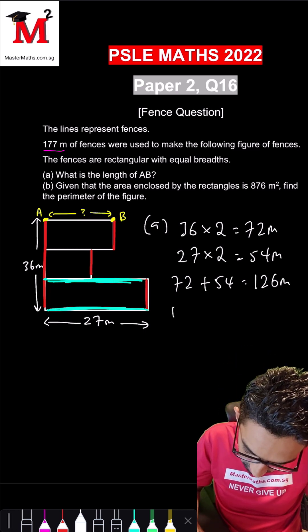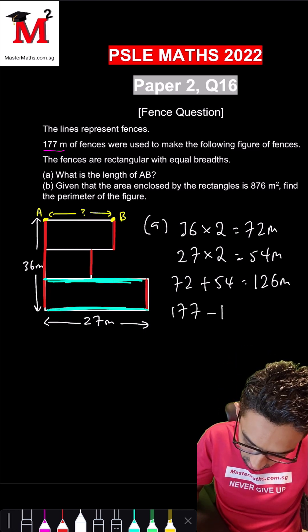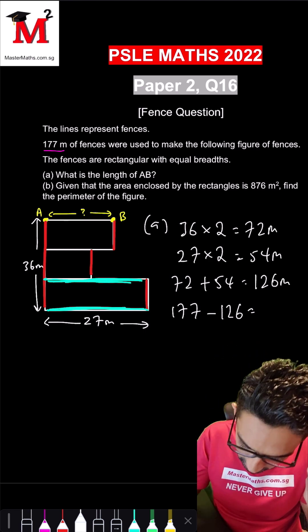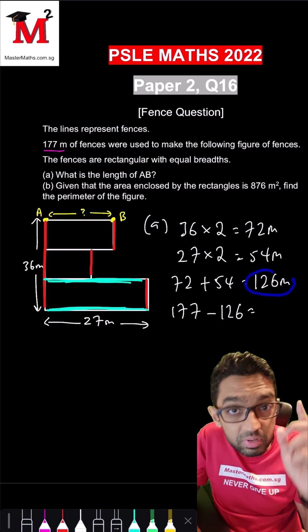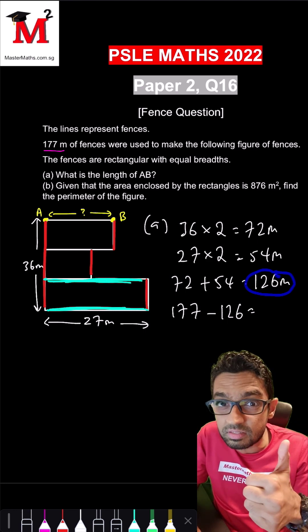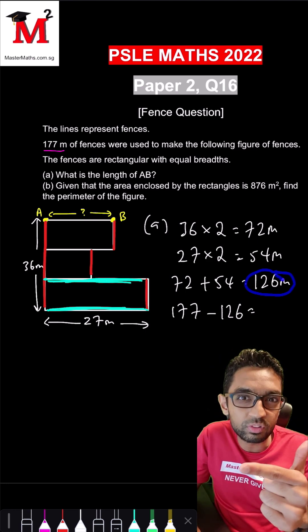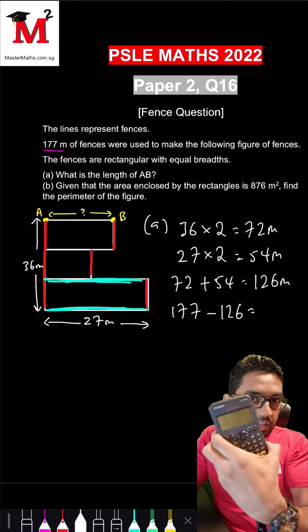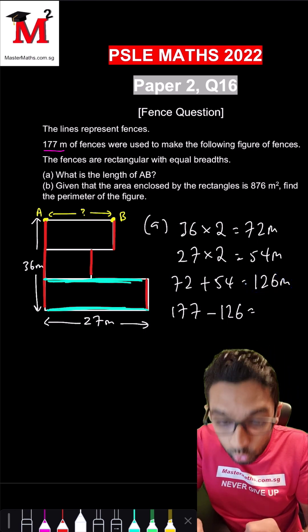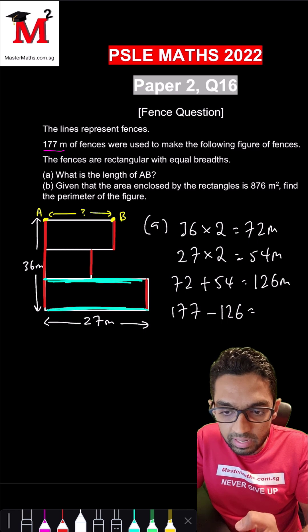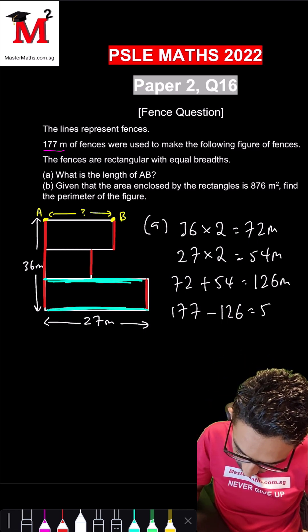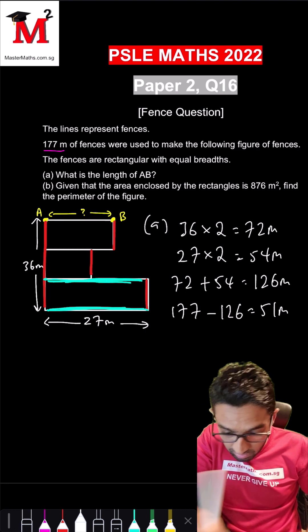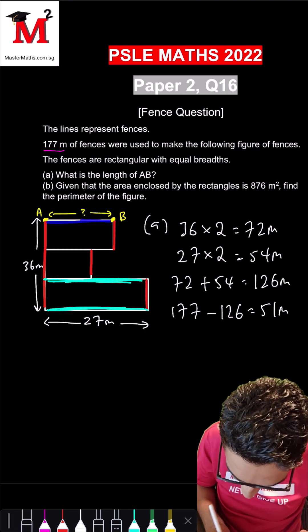And then we will take 177, take away the 126, you will get twice of AB. I repeat, this 126 represents the red lines and the blue lines. So if you take 177 minus 126, you can use the calculator for this because this is paper 2. So 177 minus 126, you will get 51 meters, which represents now that 2 times of AB.